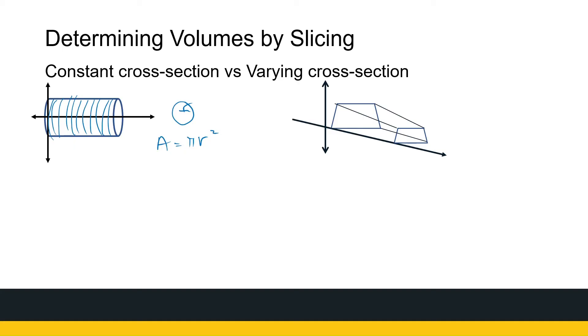Whereas, if I've got a shape with a varying cross-section, so when we do these slices, we slice it. Every time we get the same shape, the face is the same shape, but the size changes. So these are the two things we're looking at. One with a constant cross-section, which becomes very straightforward, and one with a varying cross-section.